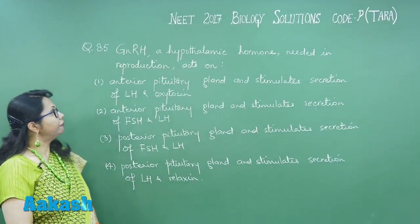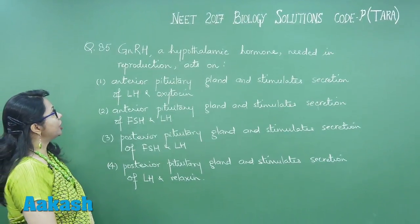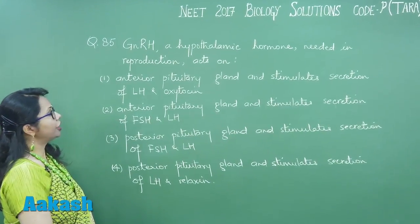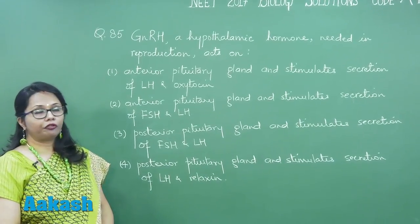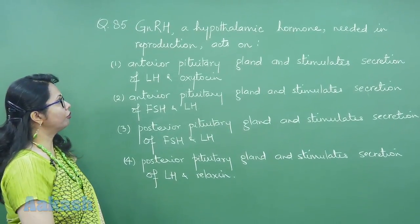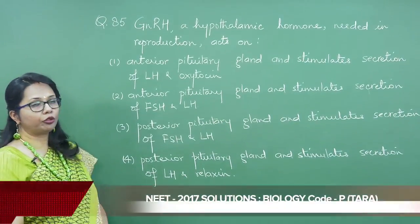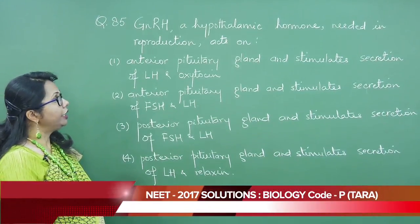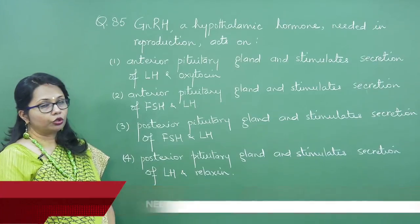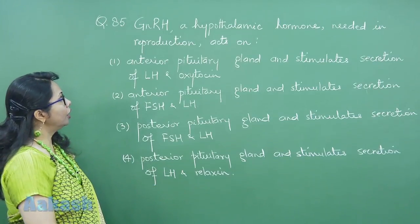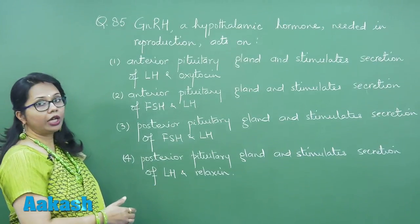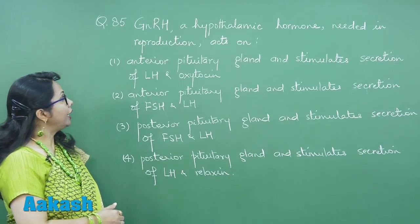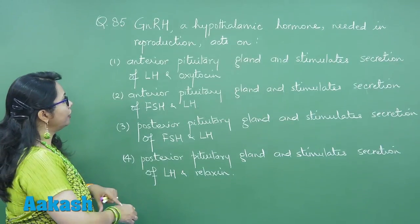Question 85. GNRH, that is Gonadotrophin Releasing Hormone, is a hypothalamic hormone needed in reproduction. GNRH acts on the anterior pituitary.